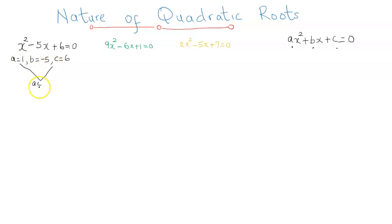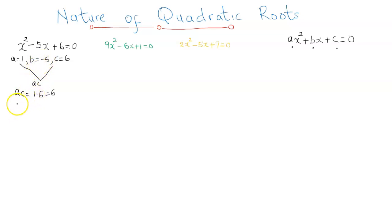To solve this equation using the factor method, we obtain the value of ac. I created a video on this — just click on the top right hand corner of the screen. So ac here is 1 times 6, which is 6. The next step is to obtain two numbers whose product is ac and whose sum is negative 5. Those two numbers are negative 2 and negative 3. So I'm going to replace negative 5x with negative 2x and negative 3x, transforming the equation to x squared minus 2x minus 3x plus 6 equal to 0.